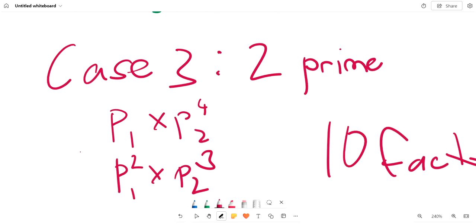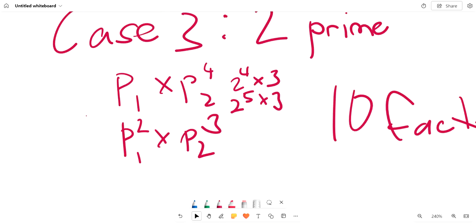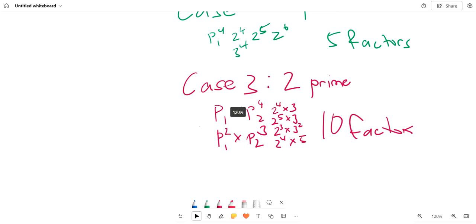So we can have 2 to the 4th times 3, 2 to the 5 times 3 (we can have more factors), 2 cubed times 3 squared, and 2 to the 4th times 5. All of these work.